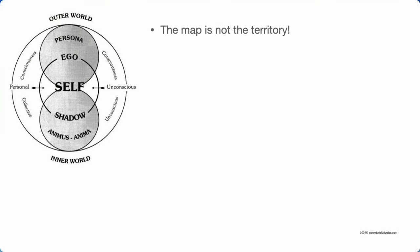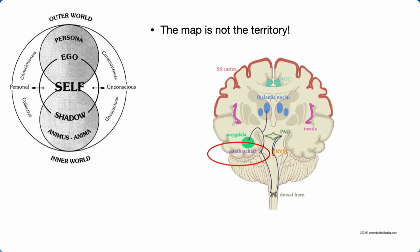Quick disclaimer up front: the map is not the territory. That means this model is an abstraction, and although you can experience these structures, you probably won't find them on an MRI. According to Mark Solmes, research suggests that consciousness sits in the parabrachial nuclei region in your brainstem. But generally speaking, we don't yet know how a physical thing like your brain produces mental things like experiences.